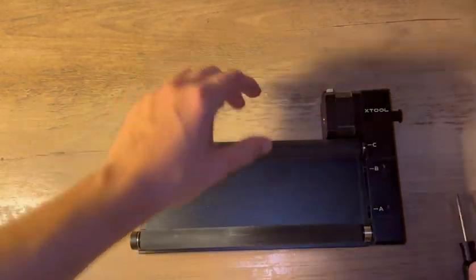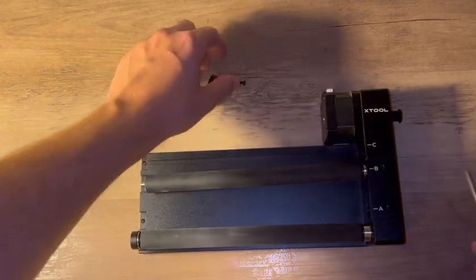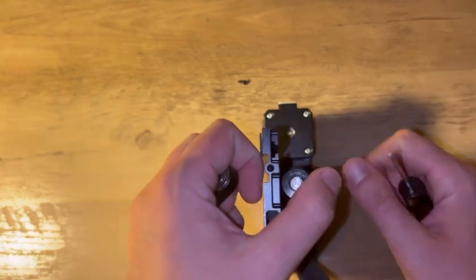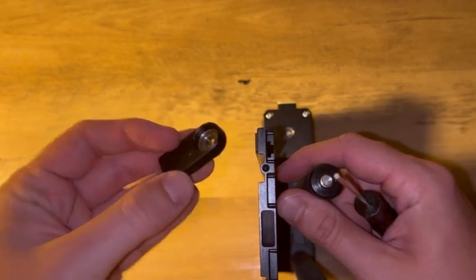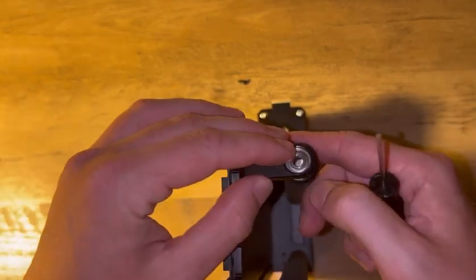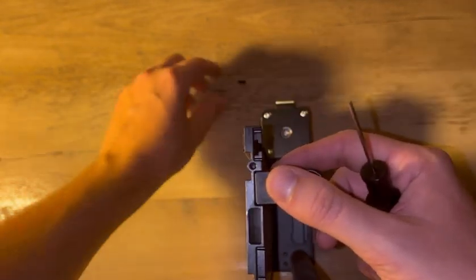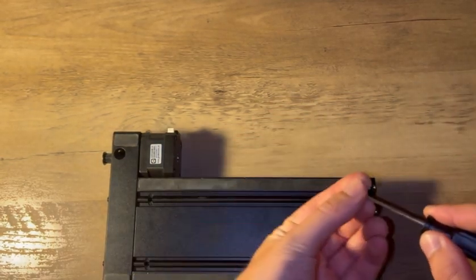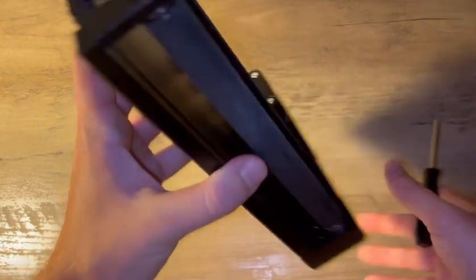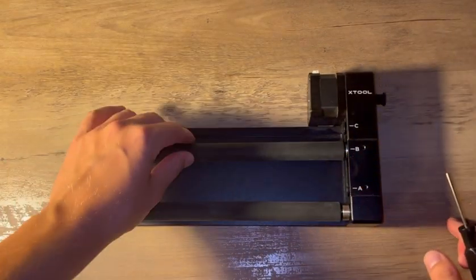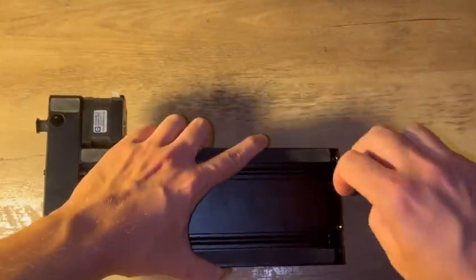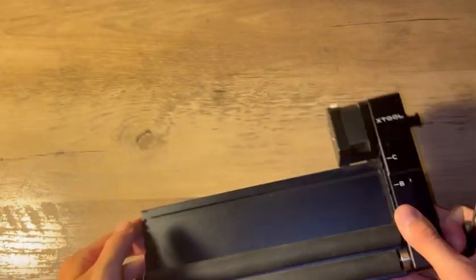Then just twist the adjustable roller counterclockwise until it moves to the B position. Then go back to the bottom and reattach the adjustable roller stand. Place it in the slot and put the screw back in the bottom. Flip the module back over and you'll notice that it's secure and smaller than it was originally. You would just repeat that process once more to move the rotary to the A position and make it even smaller.